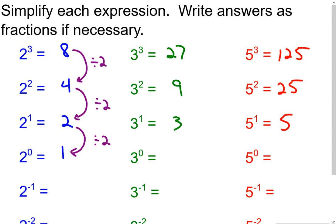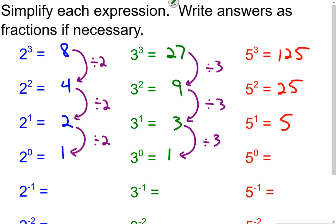Same concept for 3: going from 27 to 9 — from 3³ to 3² — I divided by 3. From 3² to 3¹, 9 to 3, again I divide by 3. So from 3¹ to 3⁰ we divide by 3 and get 1. So 3 to the zero is 1. And for 5: from 5³ to 5² we divide by 5, from 5² to 5¹ we divide by 5, so from 5¹ to 5⁰ we divide by 5, and 5 divided by 5 is 1.